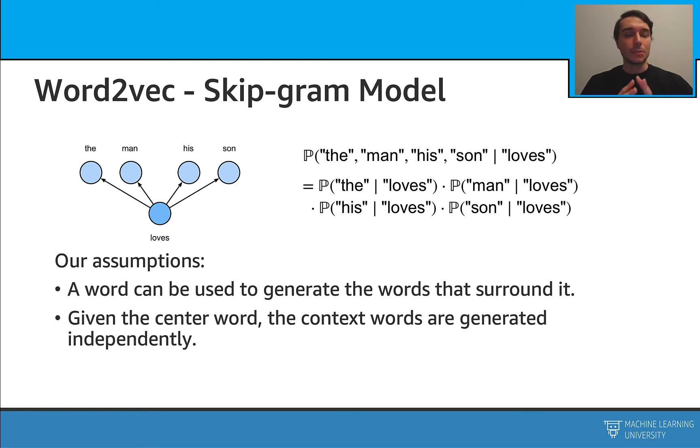So we also have another assumption here. The other assumption is that given the center word, we can actually calculate these surrounding words independently. By using the second assumption, this actually allows us to break down this probability calculation into smaller pieces so that we can easily calculate. In this case, we are going to get these probabilities. The probability that given that center word loves, what is the probability of seeing the around it? For example, times the same situation where we have the center word loves, what is the probability of seeing the man? And it goes on like that. So we can calculate this probability in an easier way.